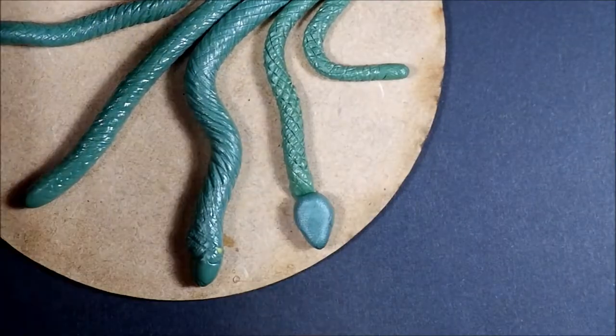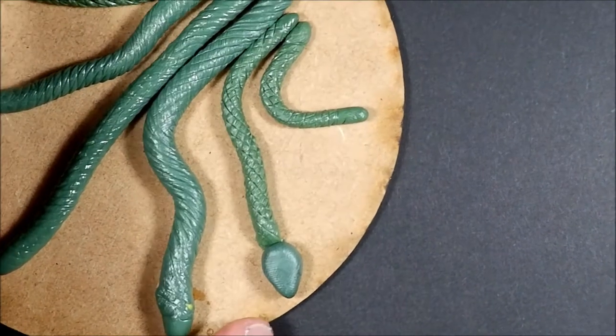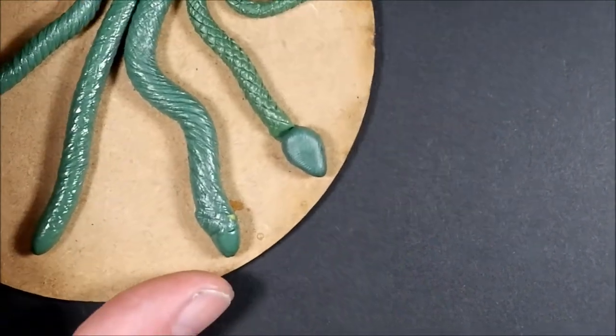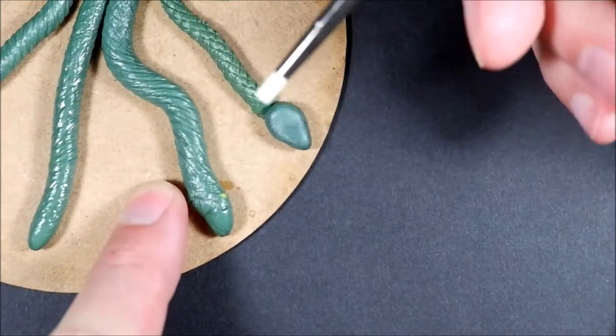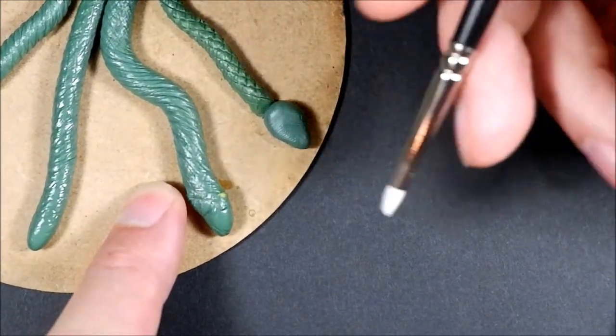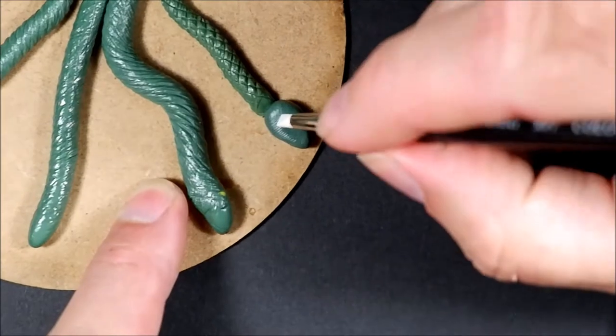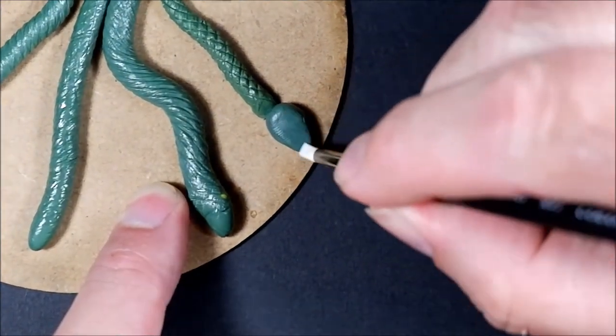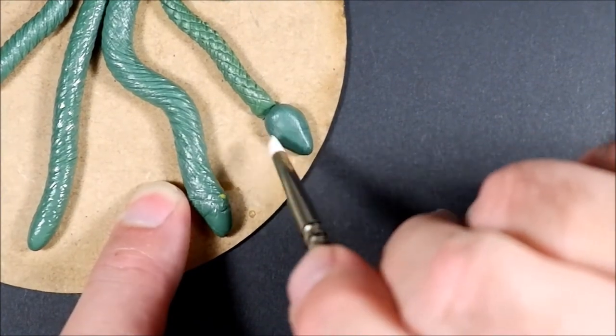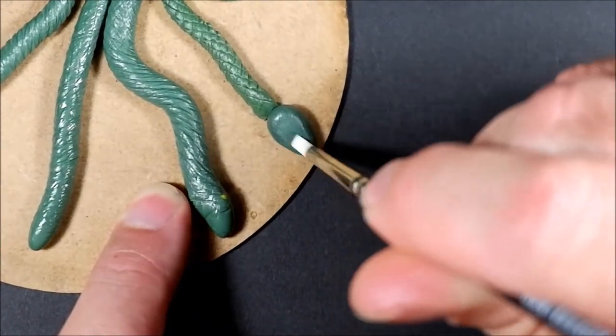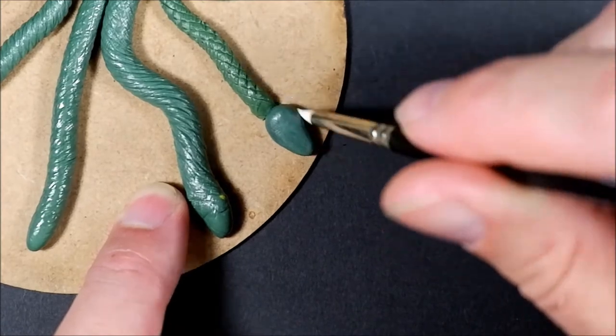Okay, so that goes on there. What you need to do then is get rid of all the fingerprints that I've put all over it. I've got a clay shaper. You can get these from eBay, they're pretty cheap. I'll just stroke over it. I just smoothed it all out. It gets rid of the fingerprints.